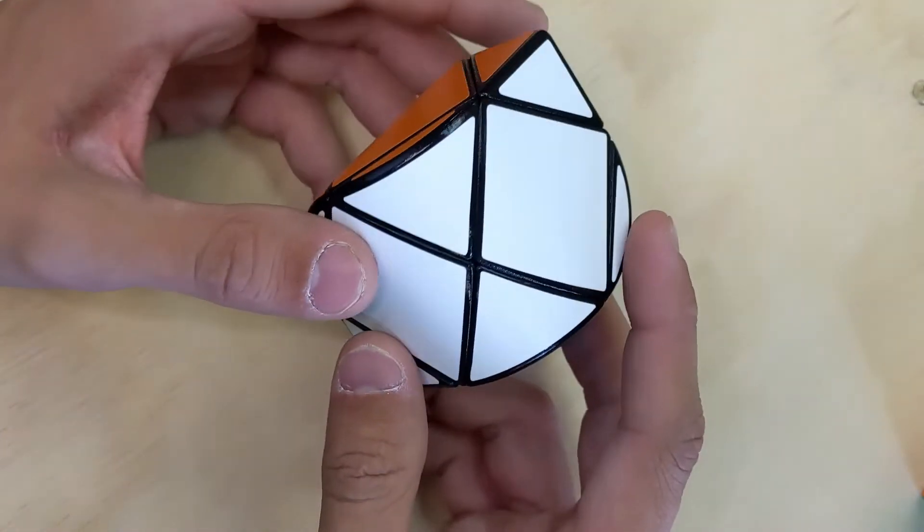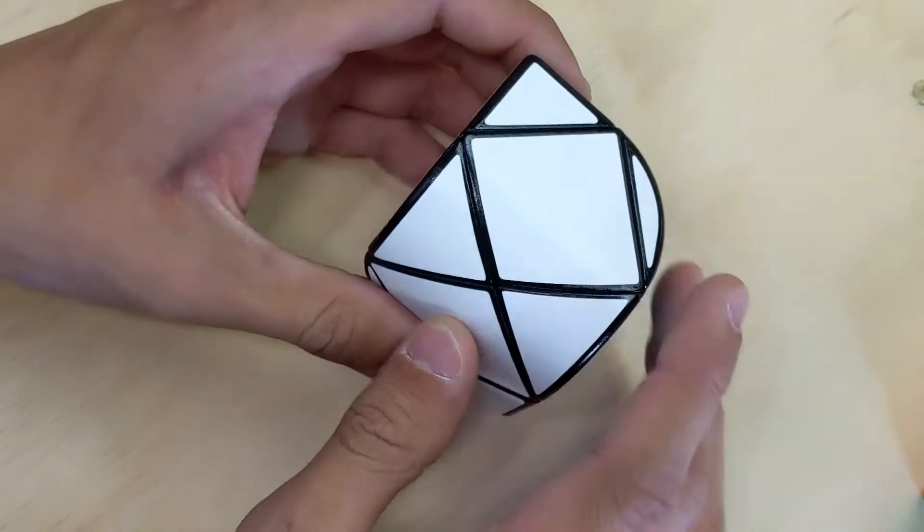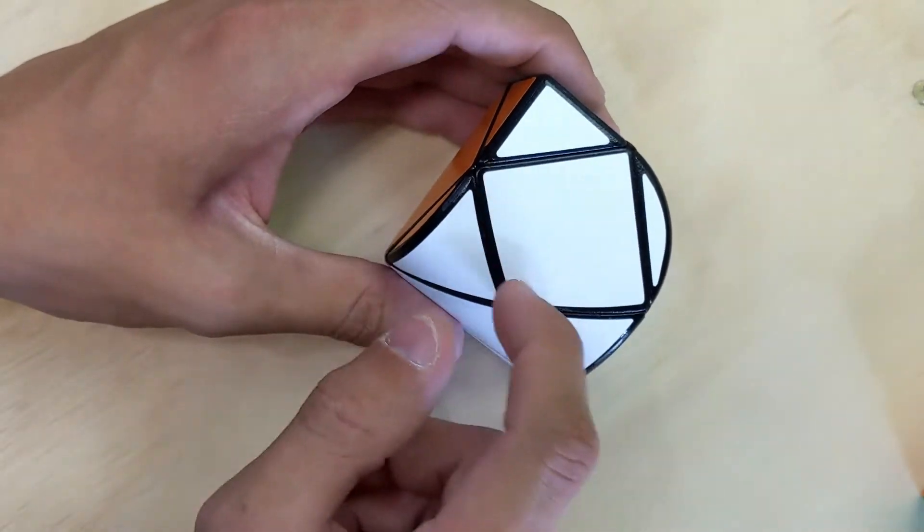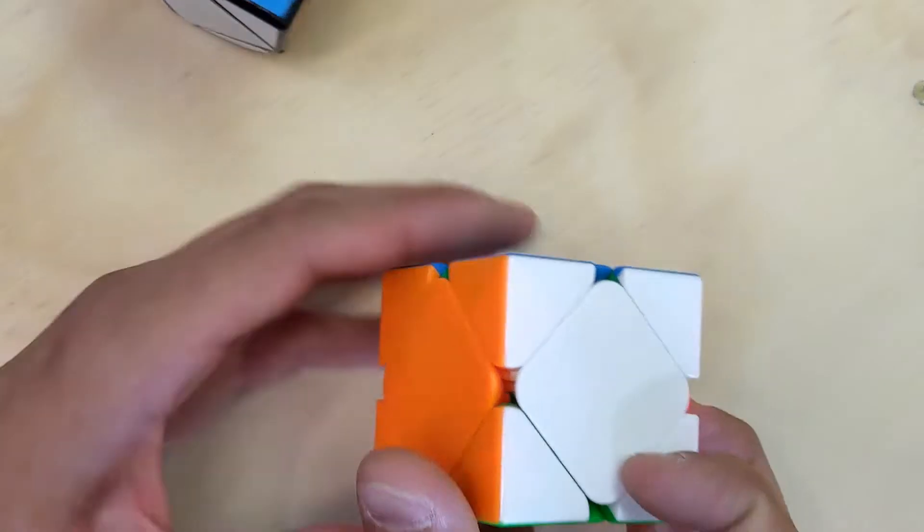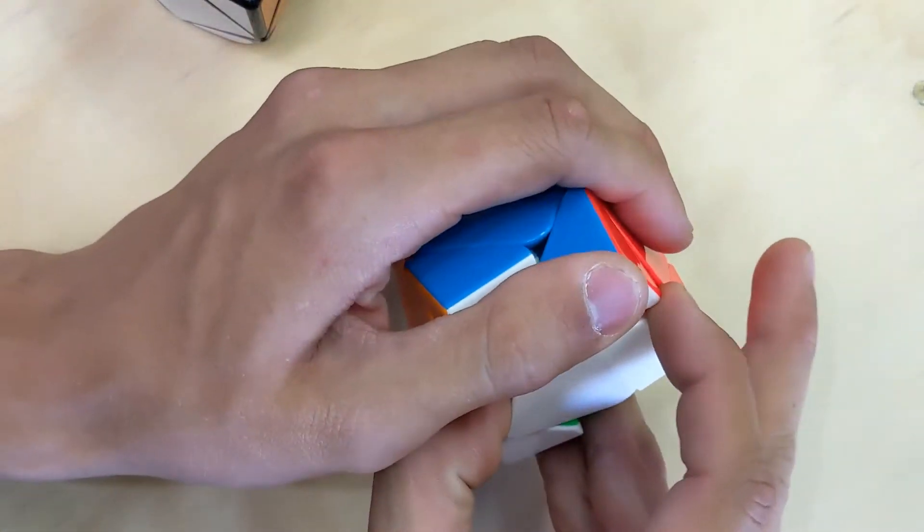Another interesting thing about this puzzle is these center square bits have an orientation. So, if we take one of these centers out on the skewb...